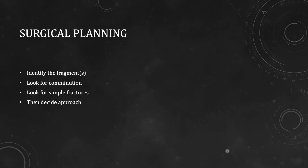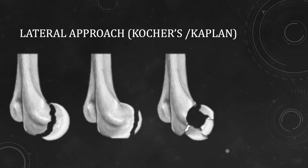Now coming to surgical planning. We have identified the fragments, examined the comminution, and assessed the fracture patterns. The lateral approach — the Kocher or Kaplan approach — is sufficient for capitellum fractures. The interval is between the extensor origin and the anconeus. Just beneath the anconeus is the lateral ulnar collateral ligament, which needs to be protected. If it is released from its origin, it needs to be repaired. The lateral approach is required for isolated capitellum fractures and when a small lateral part of the trochlea is attached to the capitellum, but only when the fracture is simple, not comminuted.